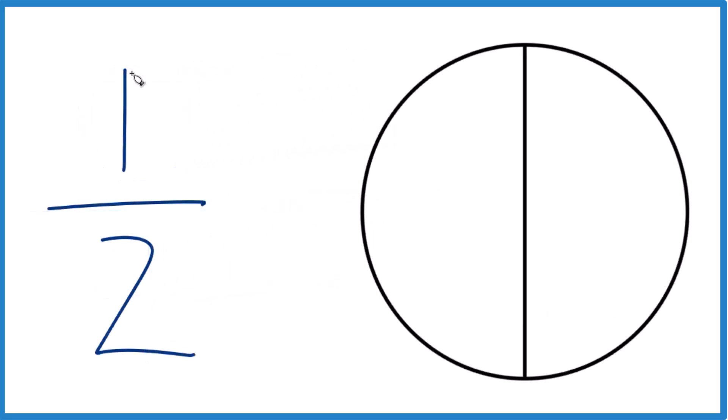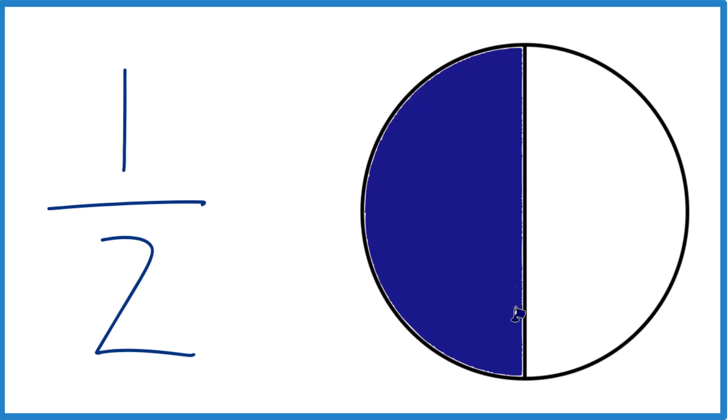When we look at a fraction like 1 over 2, 1 divided by 2, we're saying that we have one thing, that's the whole circle here, and we've divided it in two pieces. So one part out of the two, that would be our 1 half. So that makes sense.